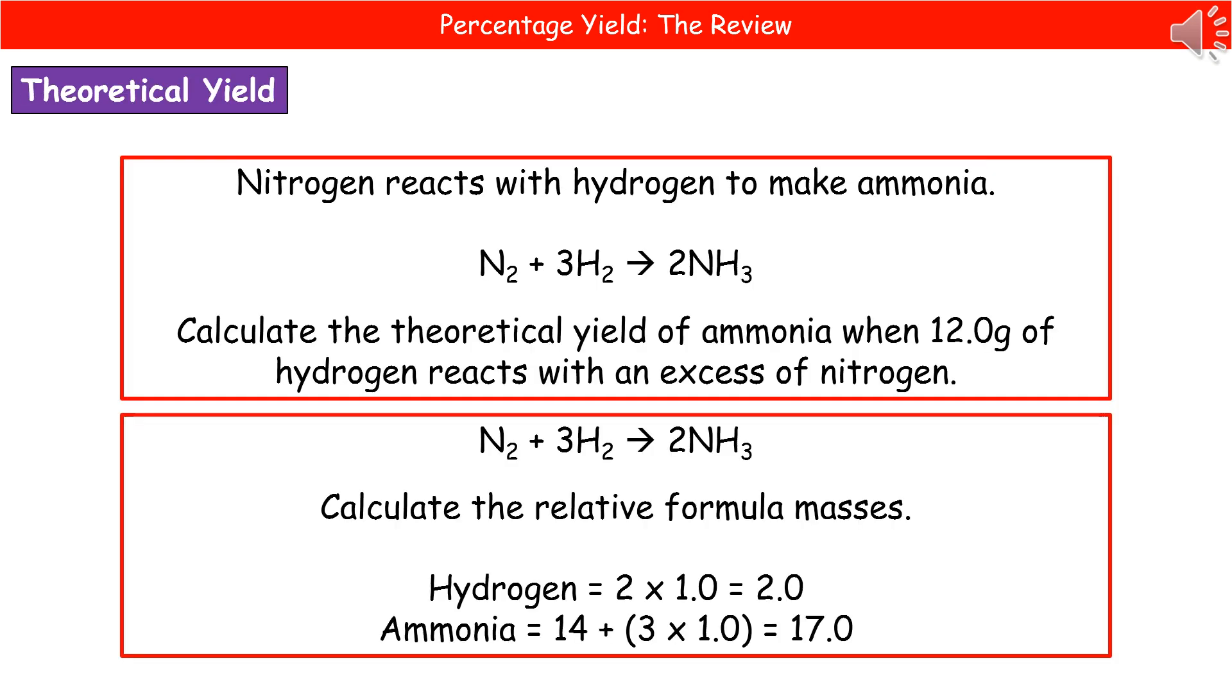Before we can actually calculate the percentage yield, we've got to know how to work out the theoretical yield. To give you an example of the kind of question we could have, we've got one here at the top. Nitrogen reacts with hydrogen to make ammonia. We've got the balanced equation in the middle there, and it tells us to calculate the theoretical yield of ammonia when 12 grams of hydrogen reacts with an excess of nitrogen.